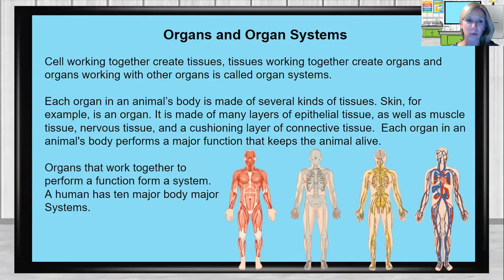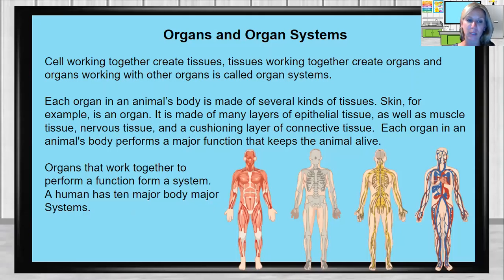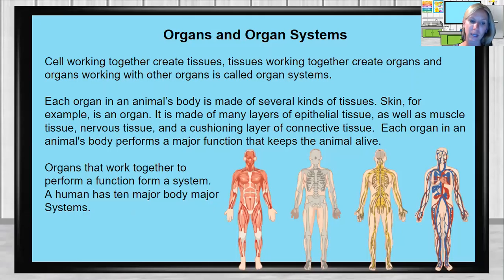Organs and organ systems: cells working together create tissues, tissues working together create organs, and organs working together create organ systems. Each organ in an animal's body is made up of several kinds of tissues. Skin, for example, is an organ — it is made of many layers of epithelial tissue, as well as muscular tissue, nervous tissue, and a cushioning layer of connective tissue. Each organ performs a major function that keeps the animal alive, and organs that work together to perform a function form a system. A human has 10 major organ systems.